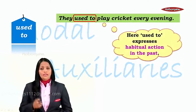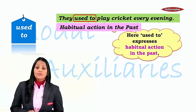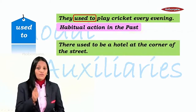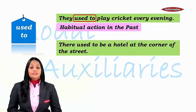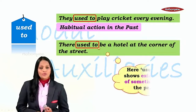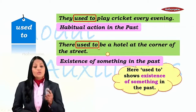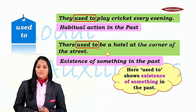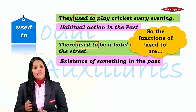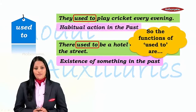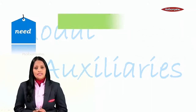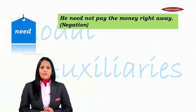Next: 'used to.' 'They used to play cricket every evening.' 'Used to' expresses habitual action in the past — remember, we said 'would' also expresses this. Next: 'There used to be a hotel at the corner of the street.' Earlier there used to be a hotel; now there isn't. So it shows the existence of something in the past. The functions of 'used to' are habitual action in the past and existence of something in the past.